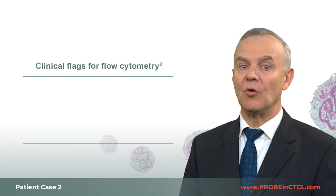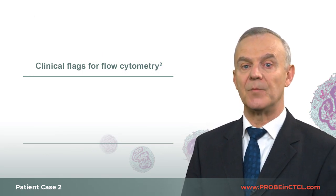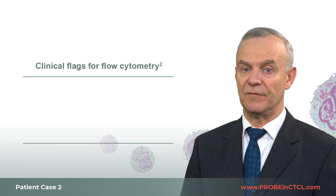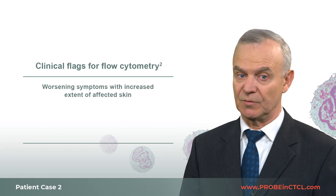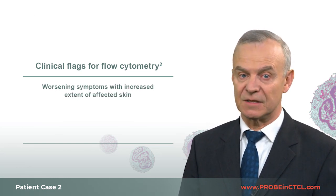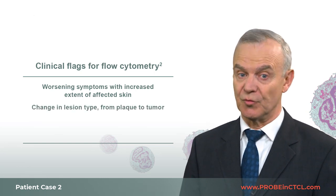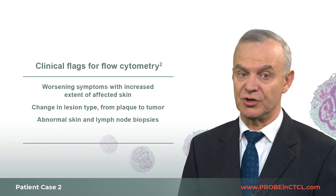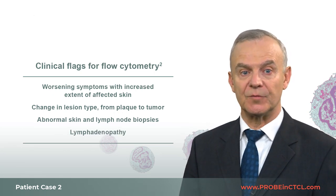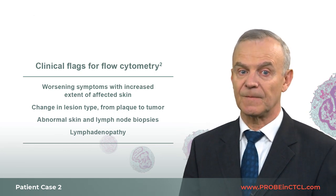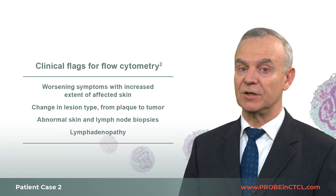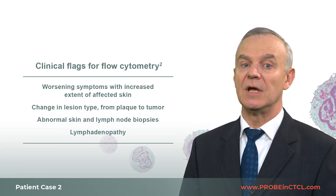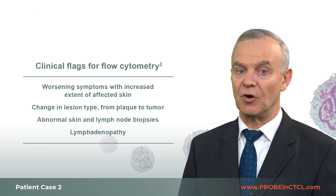Now, what clinical flags would lead me to suspect blood involvement and prompt a flow cytometry test? In this case, clinical flags that raise my suspicion of disease progression included worsening skin symptoms with increased extent of affected skin, changes in lesion type from plaque to tumor, and evidence of large cell transformation on skin biopsy indicating disease acceleration. Lymphadenopathy was also observed, suggestive of early extracutaneous disease. These are all indicative of disease progression and prompted further investigation, including a biopsy of new skin tumors, lymph node biopsy, imaging, and repeat flow cytometry tests.